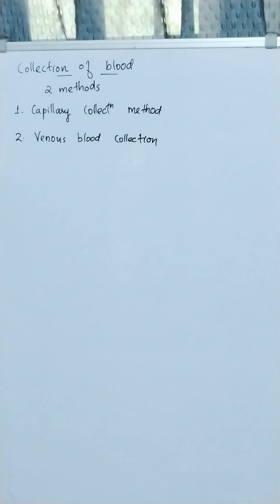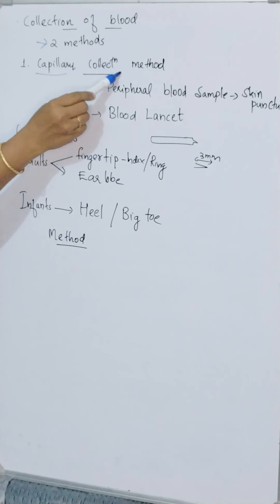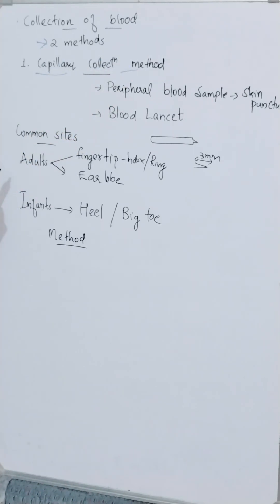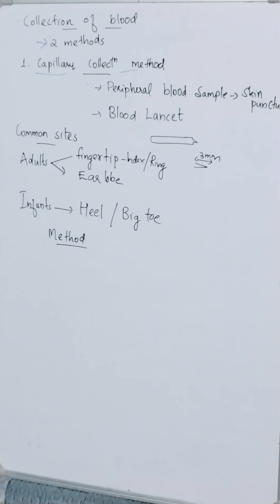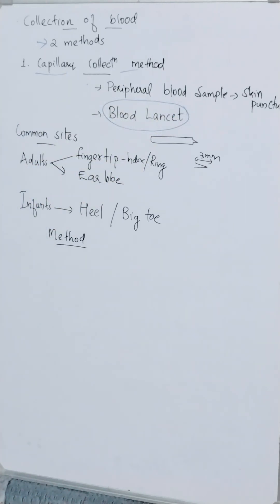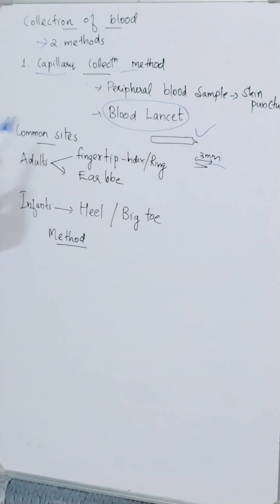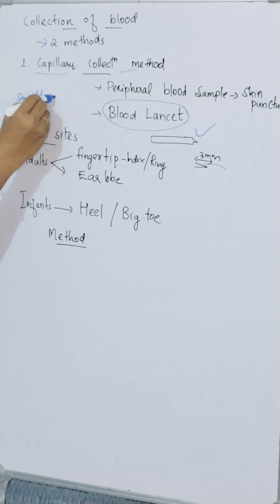Capillary blood collection method is adopted when the amount of blood required is very small. A peripheral blood sample is obtained by skin puncture using an instrument called a blood lancet. It has a flat body with a pointed tip, allowing penetration of skin to a maximum depth of 3 millimeters. Only a small amount of blood can be collected using this method.